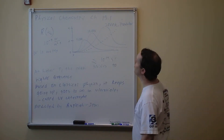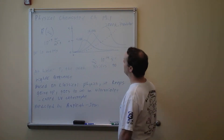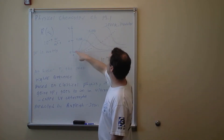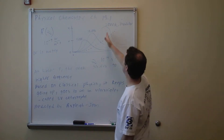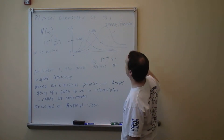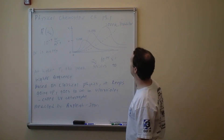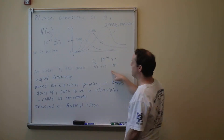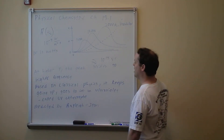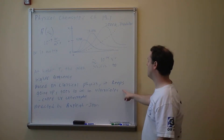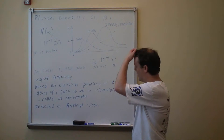Continuing with Physical Chemistry, Chapter 18, Section 1. R is the distribution function based on frequency, and frequency is the horizontal axis. At 500 Kelvins you get a certain curve; at 1500 Kelvins the peak is at a higher frequency; at 2000 Kelvins you get a peak at an even higher frequency. But the dotted line — the predicted value from classical physics — goes up and up without stopping, all the way to infinity. At ultraviolet frequencies it should go to infinity, but it doesn't. This mismatch is called the ultraviolet catastrophe, predicted by Rayleigh and Jeans.